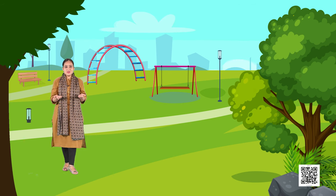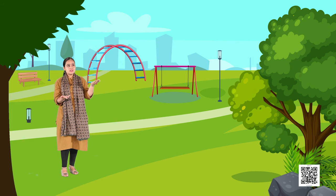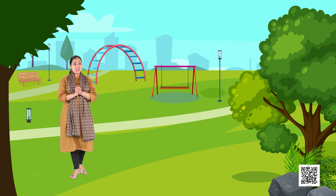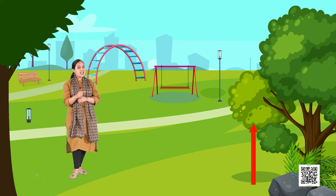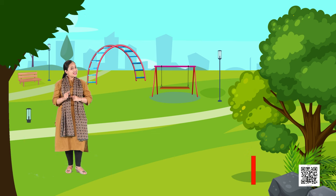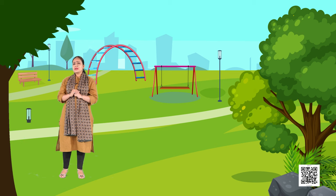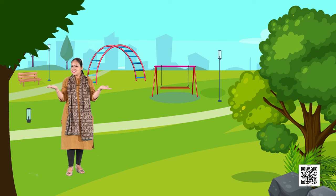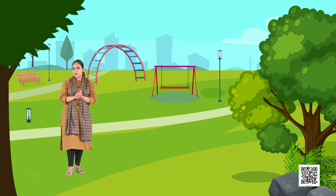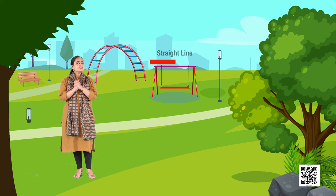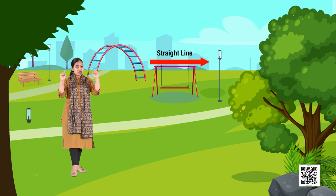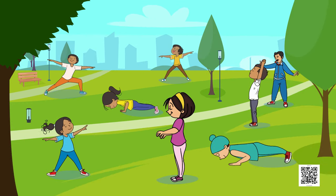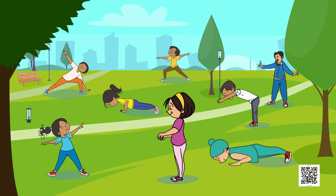Look what I found — a beautiful lush green tree standing tall. And what does it represent? It represents a straight line, a vertical straight line. But this is not the only line I'm seeing around me. I have so many lines here. I'm talking about a straight line, a curved line, and a slanting line.